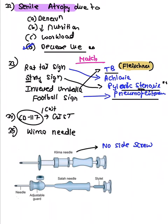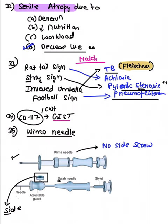CD117 is also known as c-KIT and is seen in GIST — gastrointestinal stromal tumor. An image of a Klima needle was shown. To differentiate: the Salah needle has a side screw, but the exam image did not show a side screw, so the answer was Klima needle.